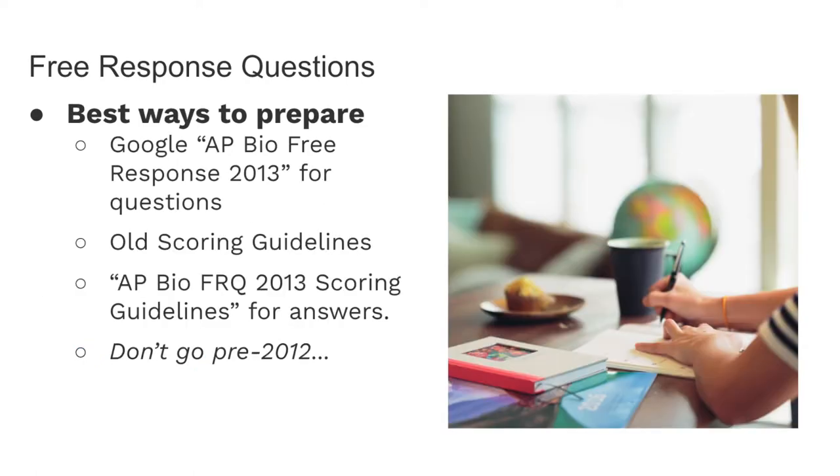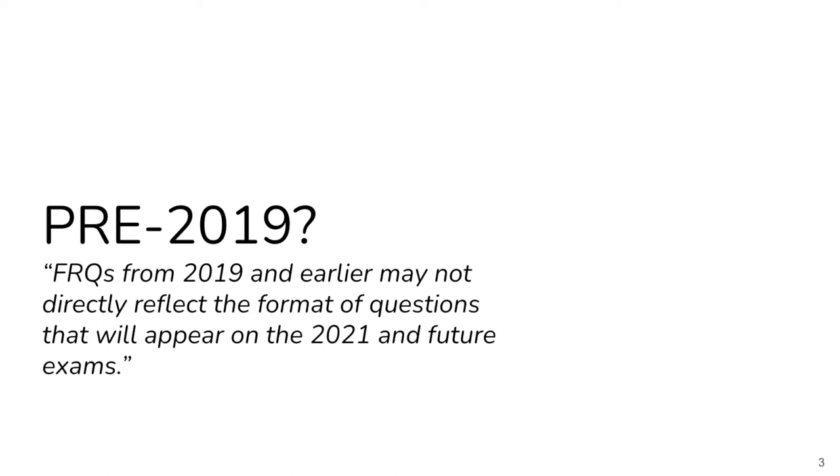The best way to prepare for any free response question is to do practice questions. You can Google AP Biology free response in 2013 to find old questions. You can also look at old scoring guidelines, which are basically the answer keys. But remember, the exam changed significantly after 2012, so you don't want to find really old AP Biology FRQs. The other thing is that before 2019, the format for these questions was not exactly the same. They're still long questions and shorter questions, but the way that the points were distributed was a little bit different, and they're not going to follow the exact structure that's now on the exam. So it's fine to practice with questions from 2013 to 2019. However, they may be slightly different from the format that I'm going to show you now.